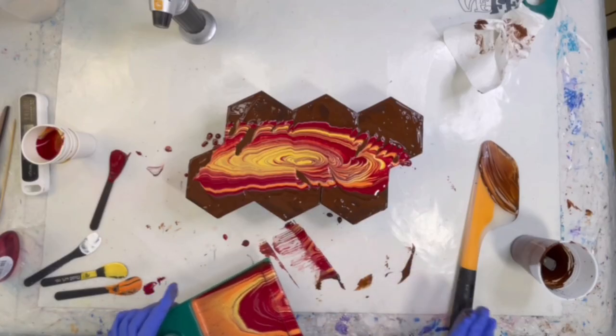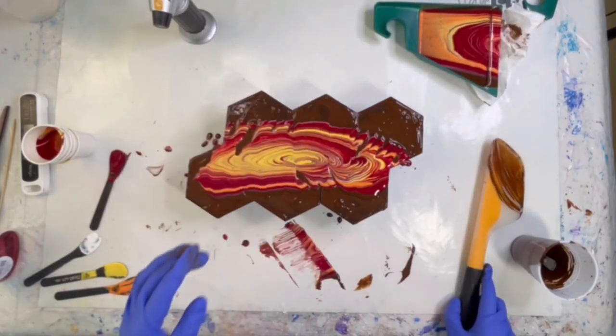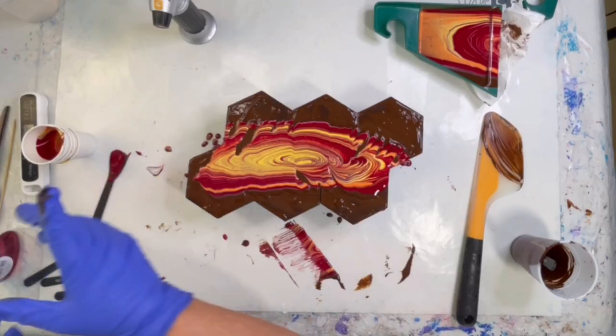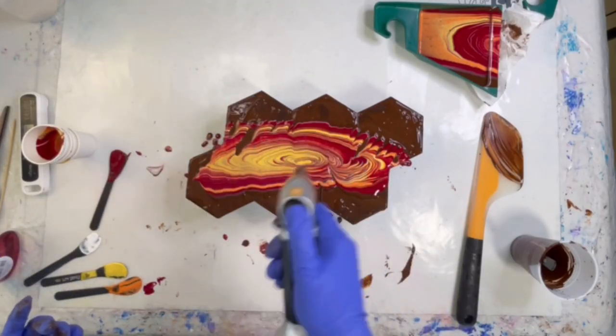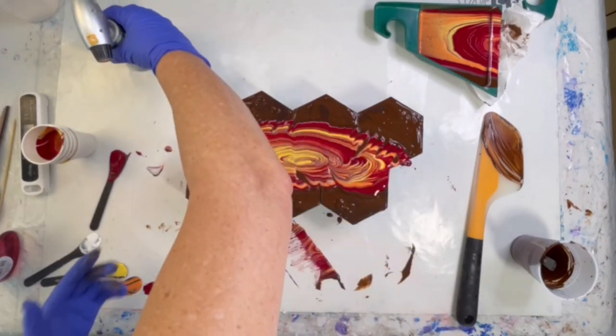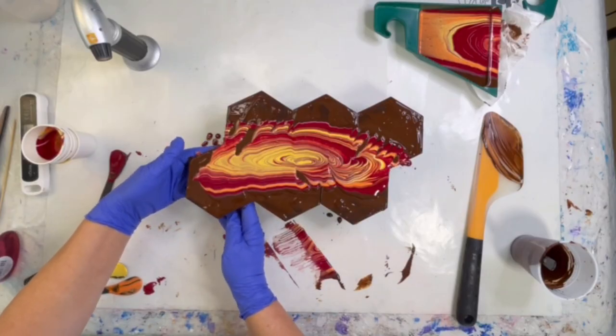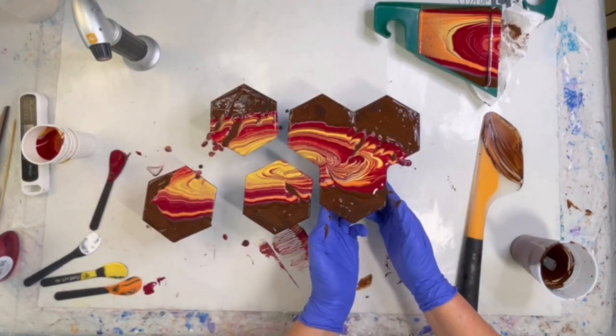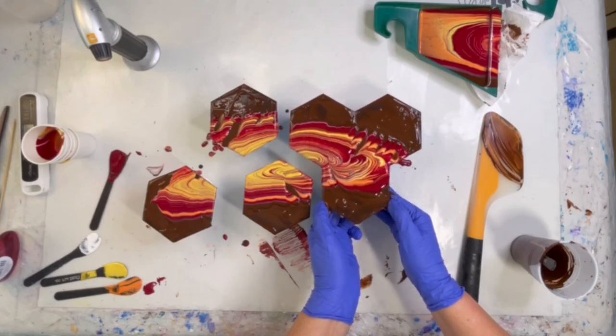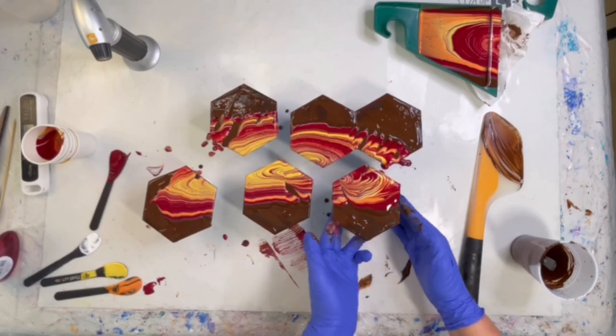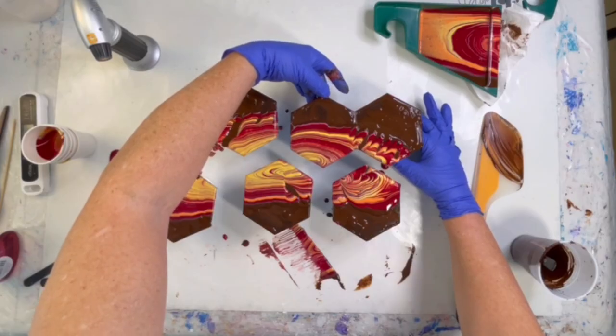And there it is. I need to separate the tiles for one. So let's do that. Do it one, let me, first let me torch. Okay, here we go. Come on. Give it up, there we go. And then last but not least.